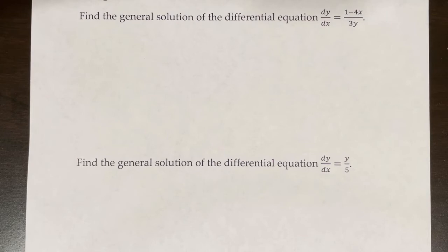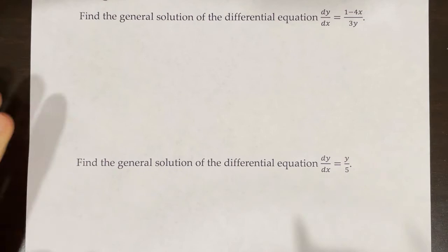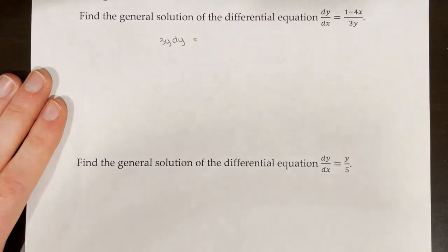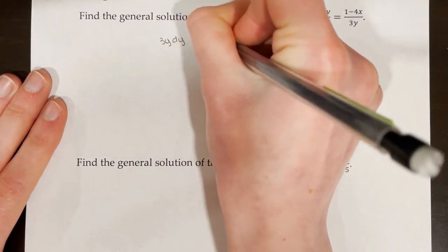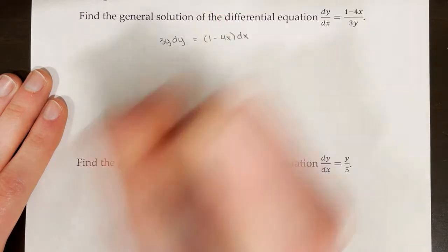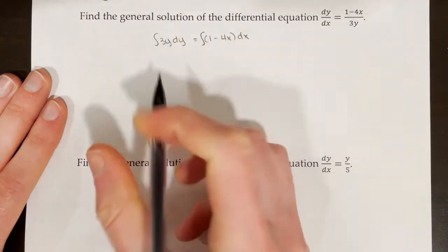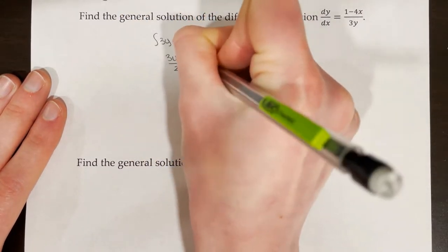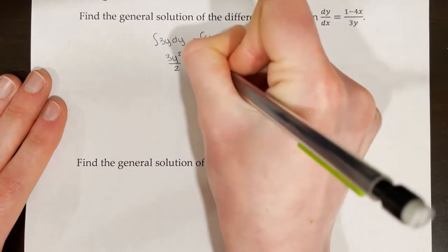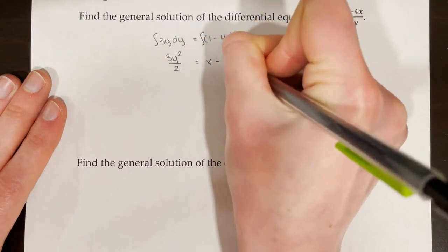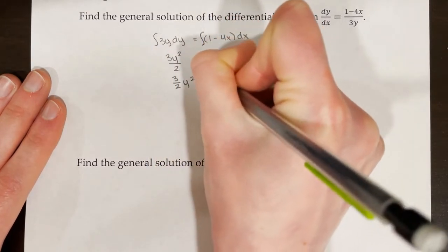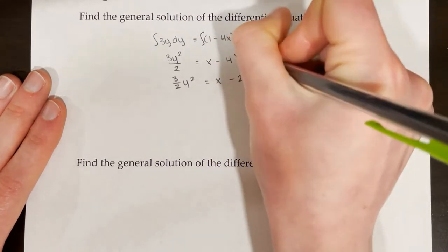Find the general solution of dy/dx = (1 − 4x)/(3y). Multiply both sides by 3y to get 3y·dy, then multiply both sides by dx to get (1 − 4x)·dx. Integrate both sides: the integral of 3y·dy is 3y²/2, equal to x − 4x²/2 + c. Cleaning that up: (3/2)y² = x − 2x² + c.